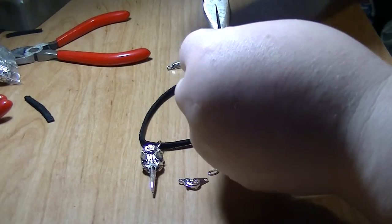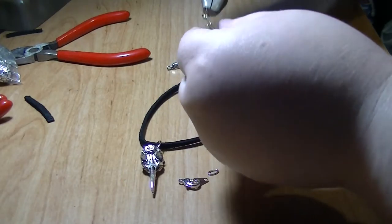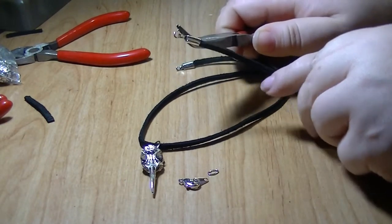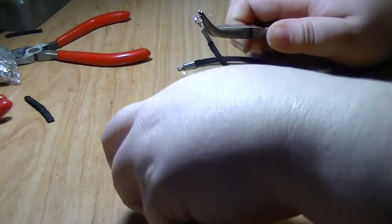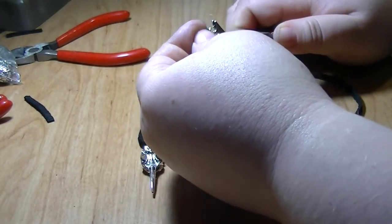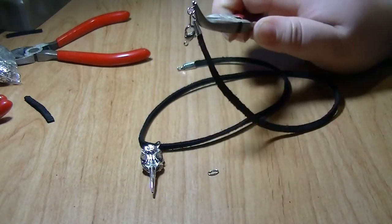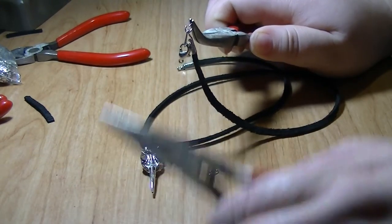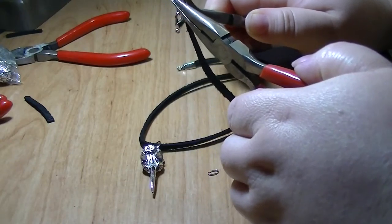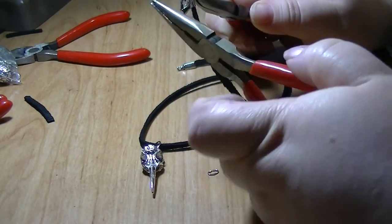Slip it on over your finding. There you go. And you just add your clasp on. You could also take that apart. I would normally. I just forgot to. And twist it right back. The exact same way you did for your charm.